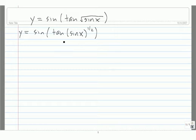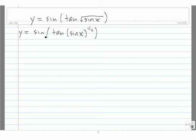Now we notice that sine of x is the outside function, and tangent of square root of sine of x is the inside function. So first, we need to find the derivative of the outside evaluated at the inside. The derivative of the outside is the derivative of sine, and that's equal to cosine. And we need to evaluate that at this inside here.